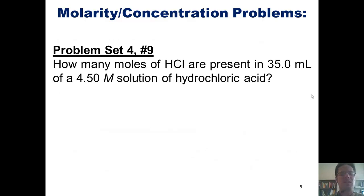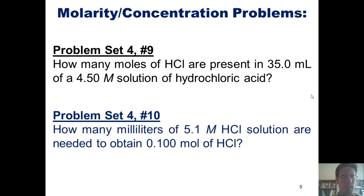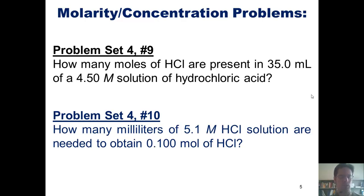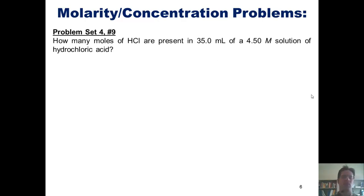Here is a wonderful example problem: How many moles of hydrochloric acid are present in 35 milliliters of a 4.5 molar solution of hydrochloric acid? And another: How many milliliters of a 5.1 molar HCl solution are needed to obtain 0.1 moles of HCl? Beginning with the first one: how many moles of HCl are present in 35 milliliters of a 4.5 molar solution of hydrochloric acid?